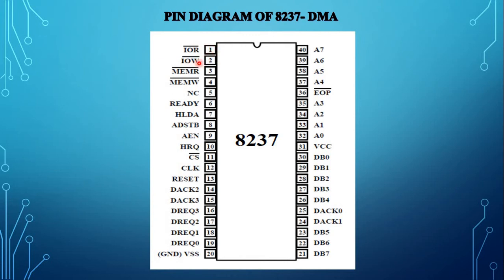Pin number 2 is the IO write signal, which is also a bidirectional IO write control signal. It is an input control signal for writing the DMA controller during programming mode and an output control signal during the DMA write cycle. Pin number 3 is the memory read signal — it is an output signal used to access data from the selected memory location during read operation. Pin number 4 is the memory write signal, also an output signal.